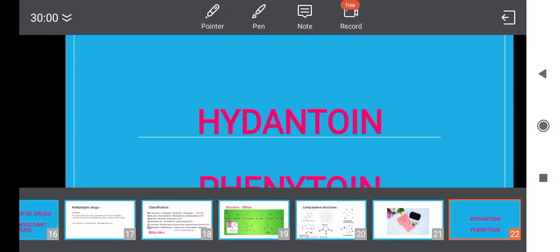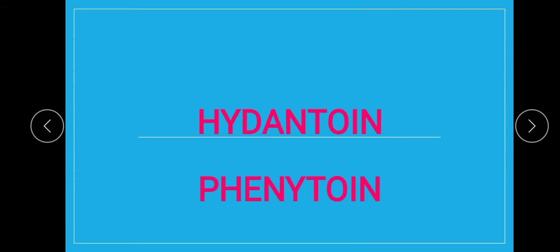Hello dear learners, today we are going to talk about hydantoin. From the hydantoin class we are going to talk about the drug phenytoin. Phenytoin belongs to the class hydantoin which is an anti-epileptic drug. In continuation with the last two parts, in the first part we covered all the types of epilepsy, and in the second part we covered the trick to remember the classification of anti-epileptic drugs. So coming towards today's third part — hydantoin — the first class of anti-epileptic drug, and the drug of choice is phenytoin.